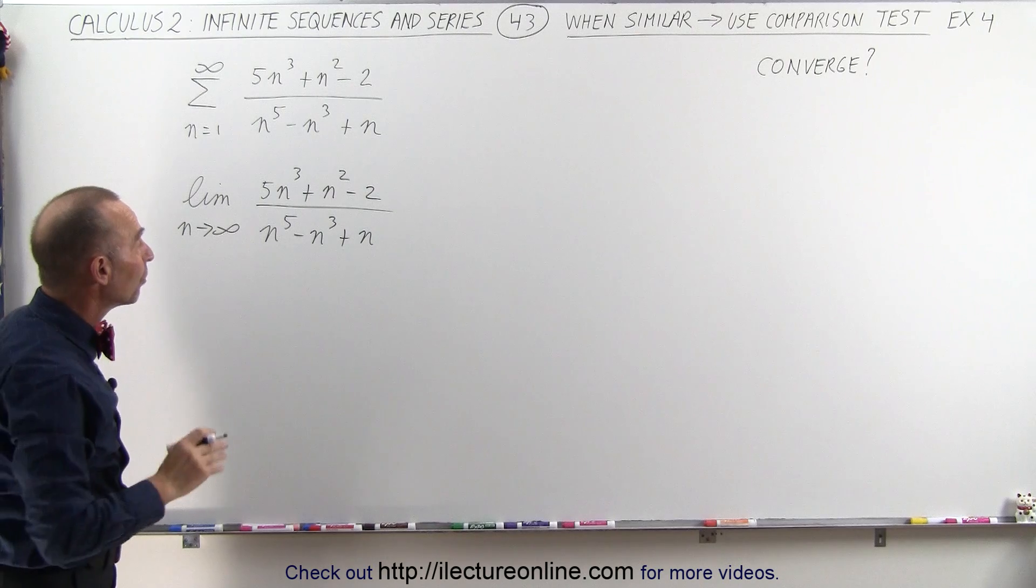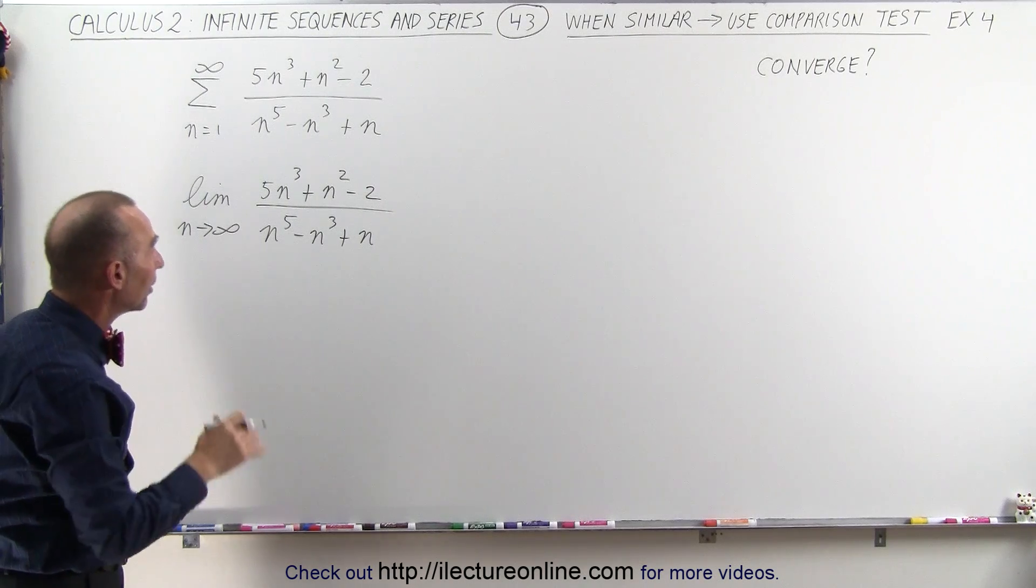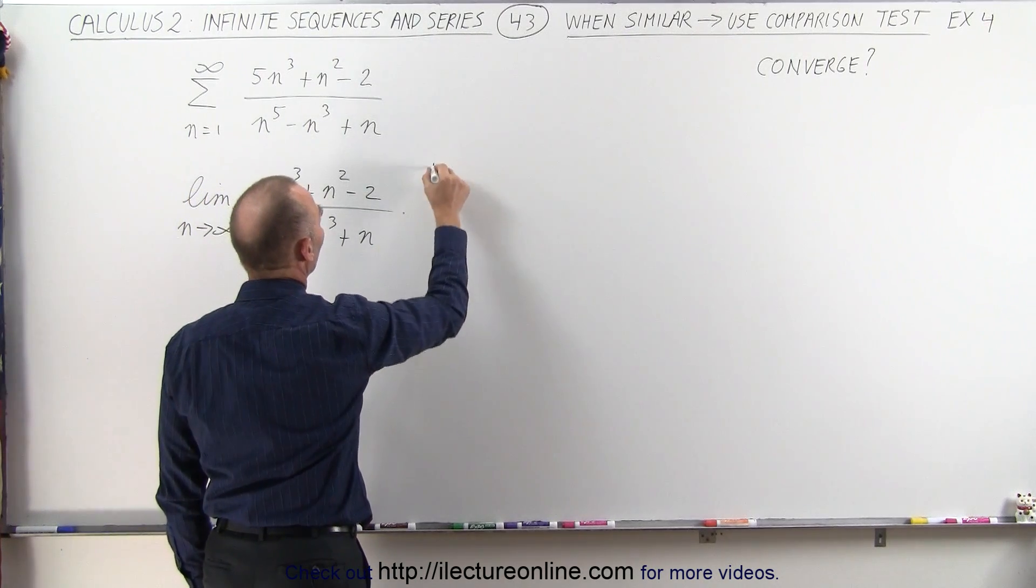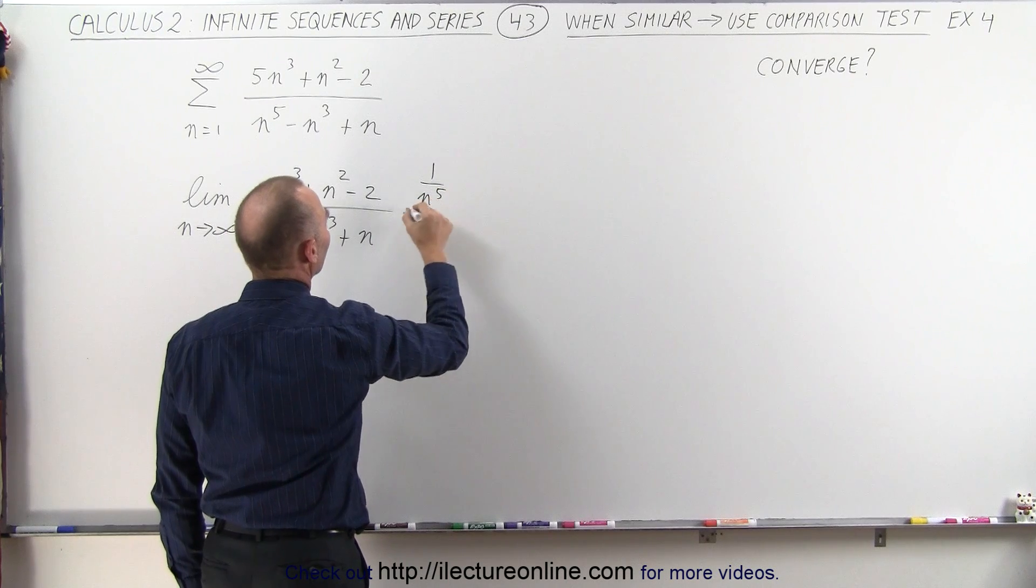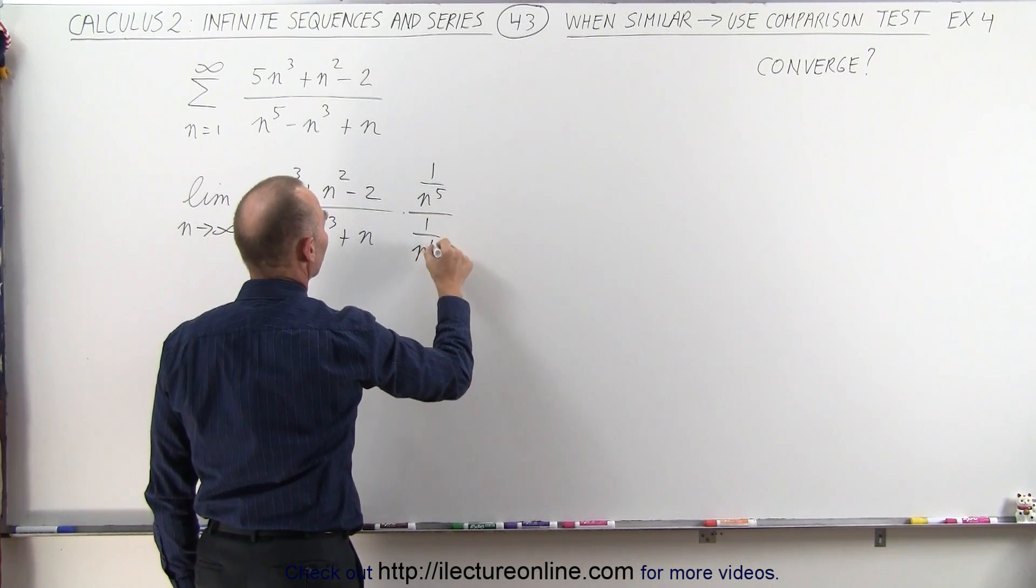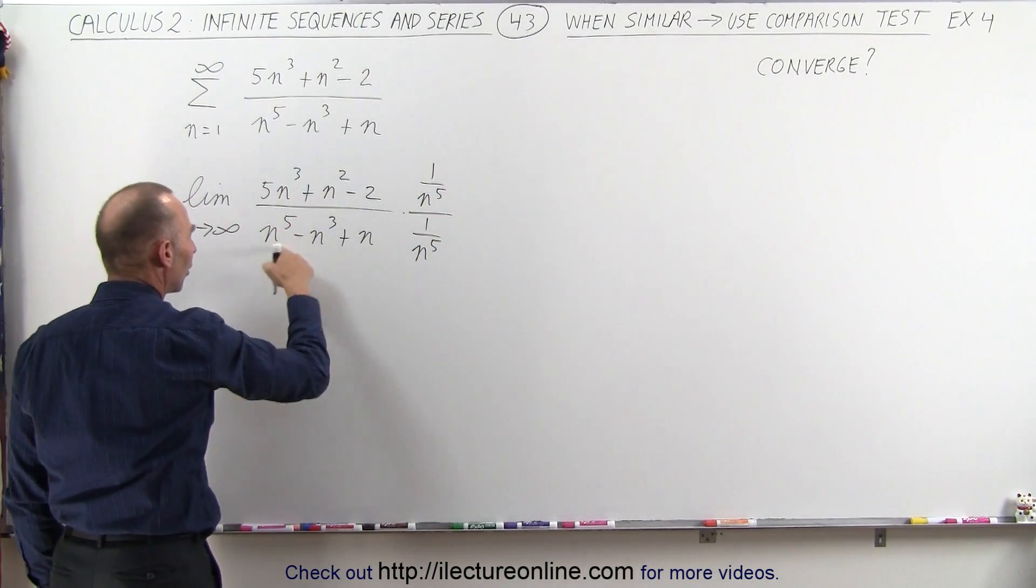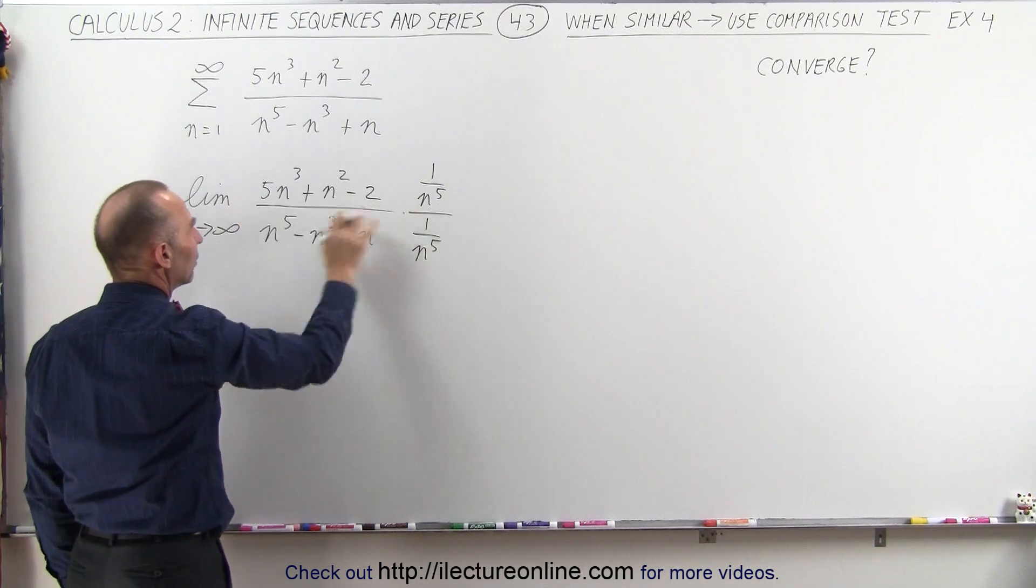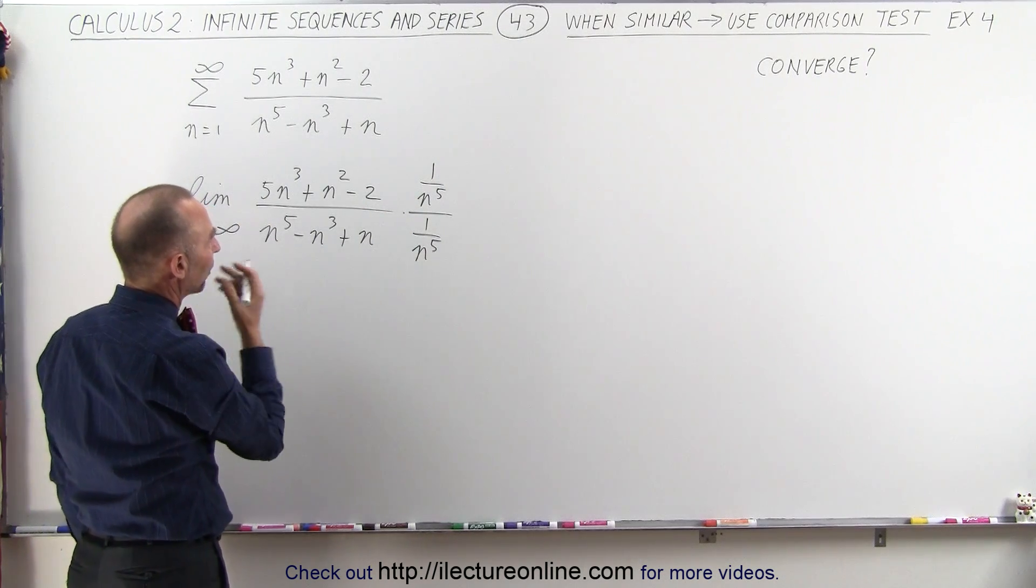What we're going to do is multiply both the numerator and the denominator by 1 over n to the fifth, because n to the fifth is the largest component in the numerator or the denominator. When we do that,